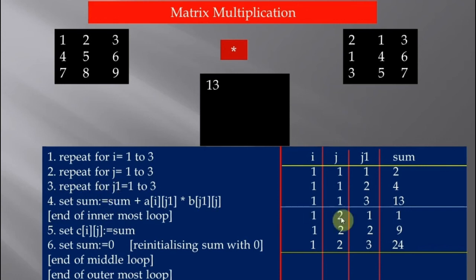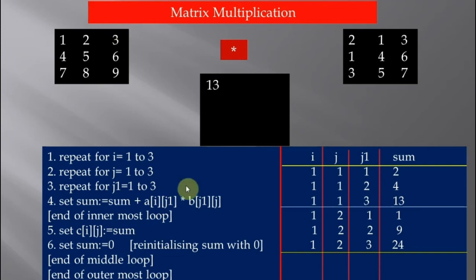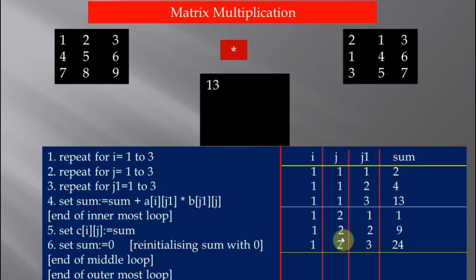j1 increments to 3. Current sum is 9 plus a13 multiplied by b32. a13 is 3 and b32 is 5, so 3 times 5 is 15, and 9 plus 15 gives 24. The innermost loop breaks and the value of sum, 24, is assigned to C12 because j is 2. I encourage you to complete the dry test yourself and we will ultimately get the complete resultant matrix.